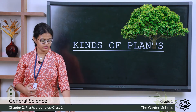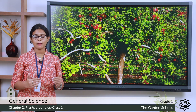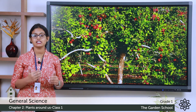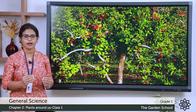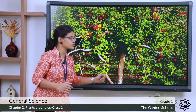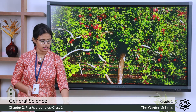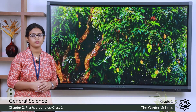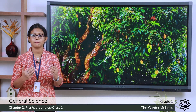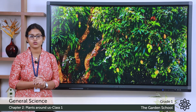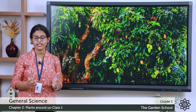Let's see an example. This is an apple tree. Apple tree is a big plant. Trees have a thick stem — this is the stem of a tree. You know which plant is this? This is a mango tree. Mango tree is a big plant. It is big and strong.